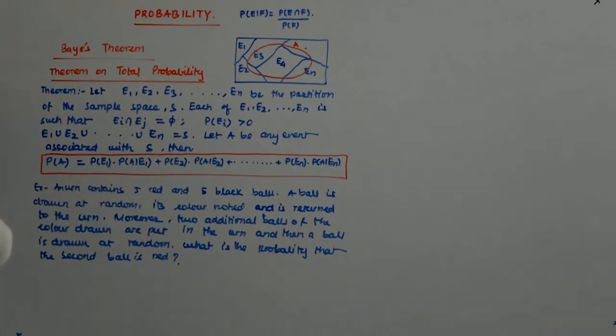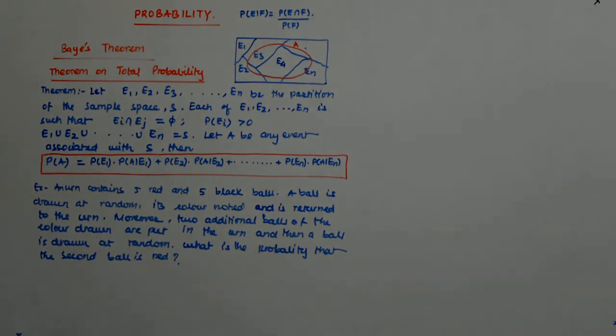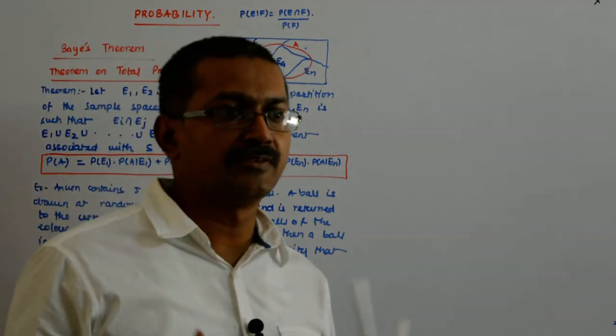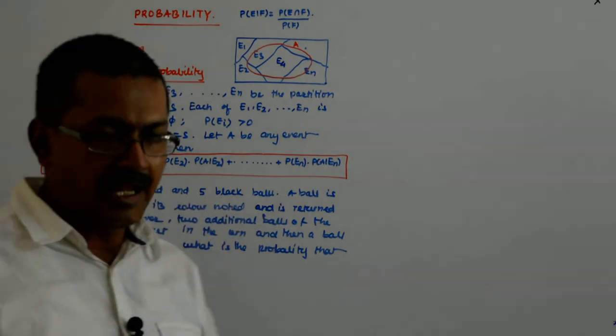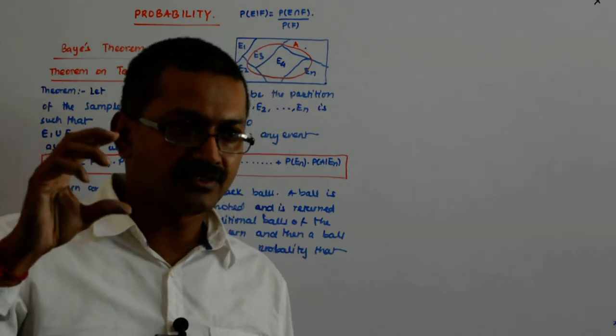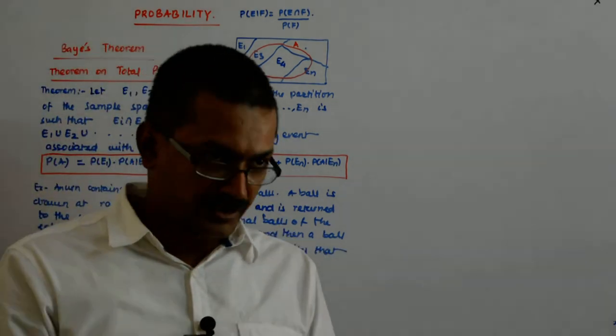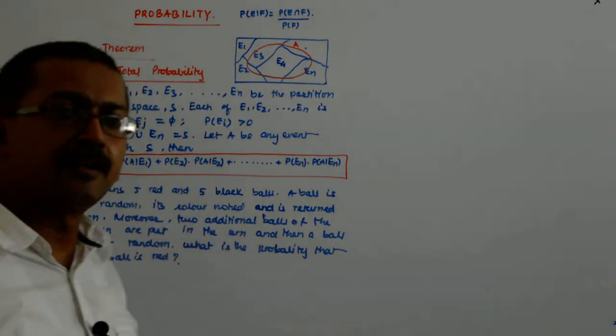An urn contains five red and five black balls. A ball is drawn at random, its color is noted and is returned to the urn. Moreover, two additional balls of the same color that you have drawn are put in the urn, and then a ball is drawn at random. So two events have happened.